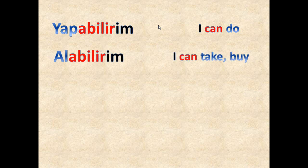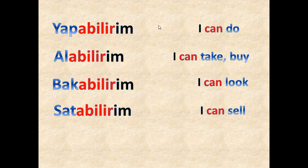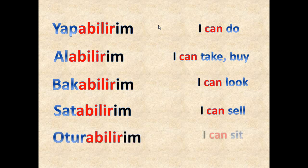'Alabilirim' means 'I can take' or 'I can buy'. 'Bakabilirim' means 'I can look'. 'Satabilirim' means 'I can sell'. 'Oturabilirim' means 'I can sit'. Here I have given the example with 'I', and throughout the video the examples will use 'I' as subject since it is the most common in daily life.